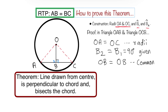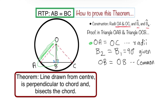What you may not have noticed is the pattern I used. First, OA equals OC — that's the hypotenuse in each triangle. Then B2 and B1 are both 90 degrees — that's the right angle. I went for the hypotenuse and the right angle specifically because these two triangles are right-angled triangles.